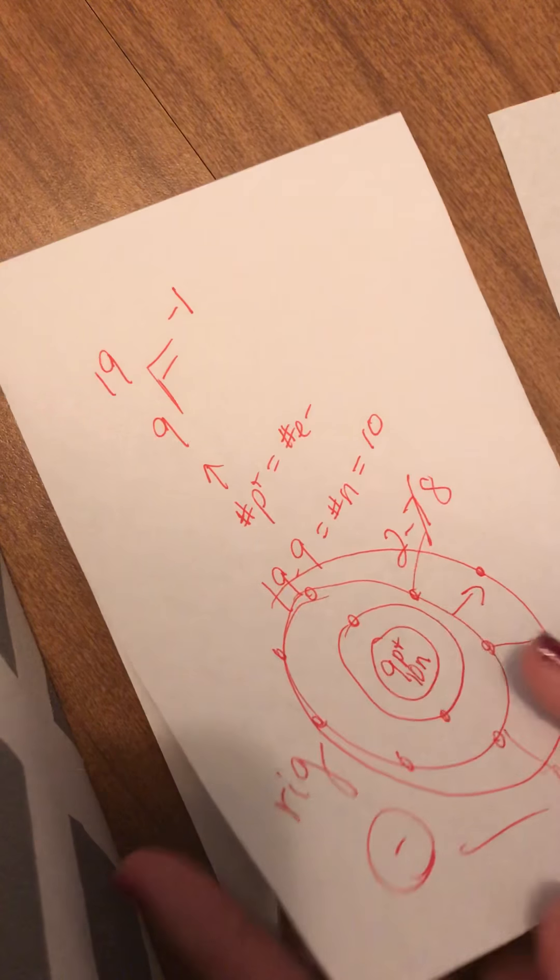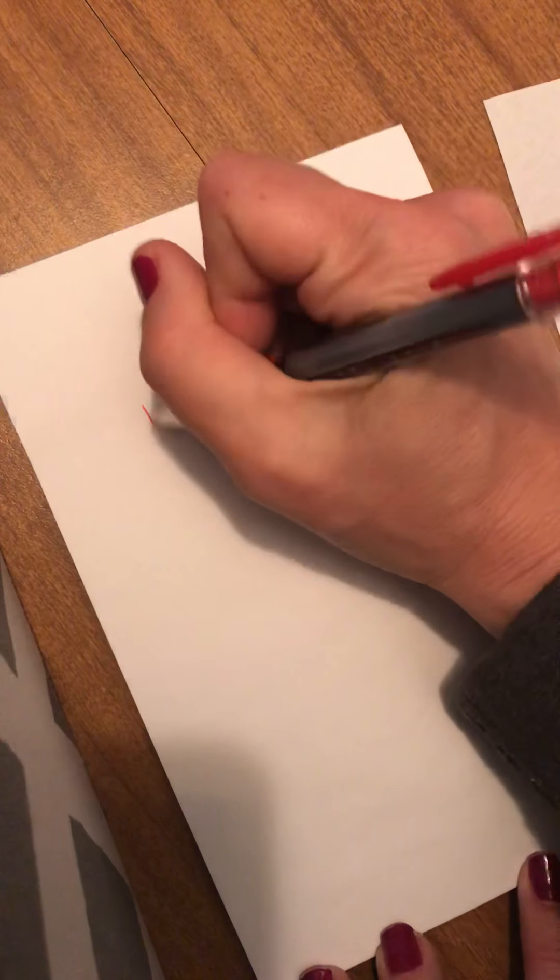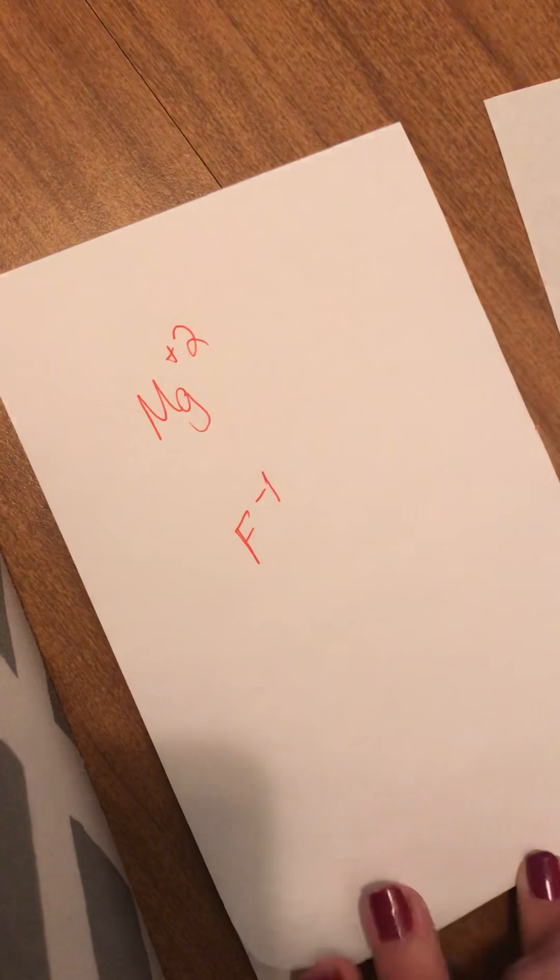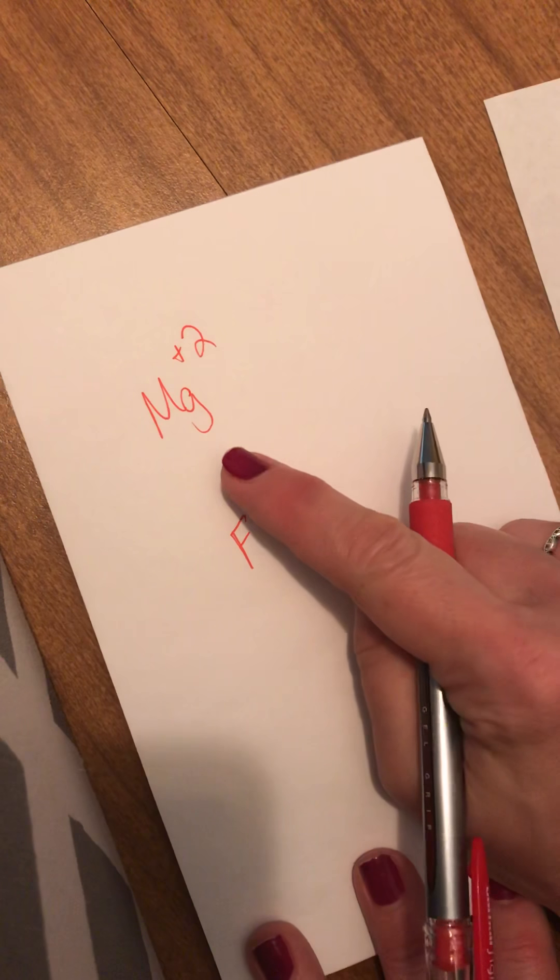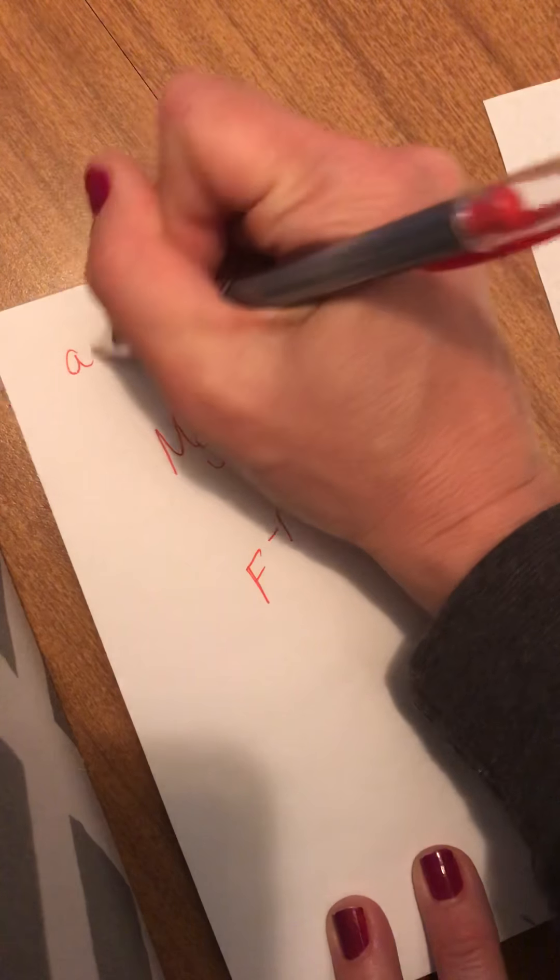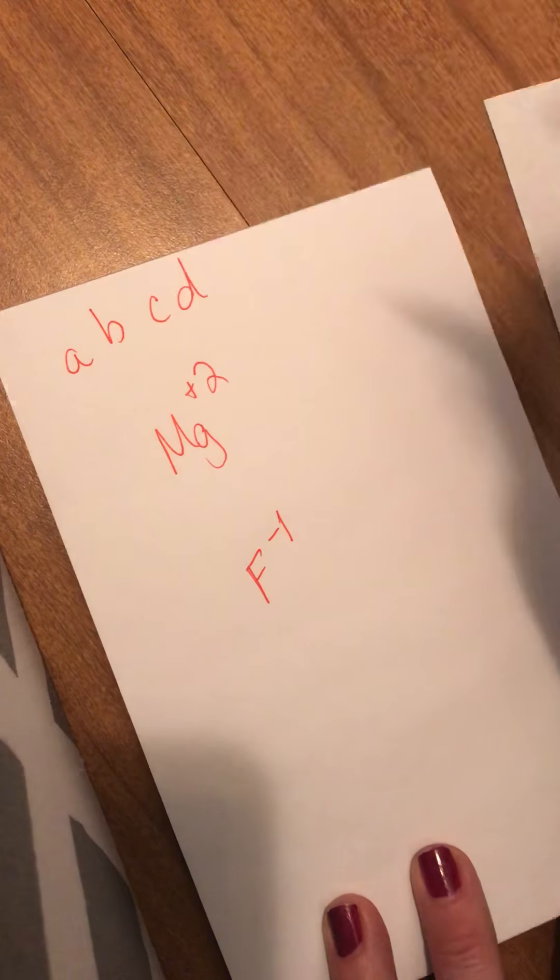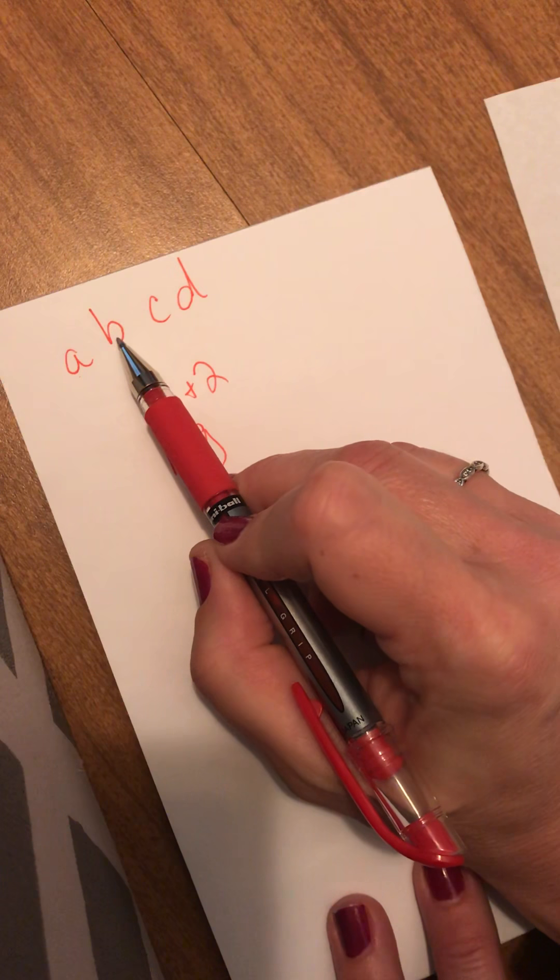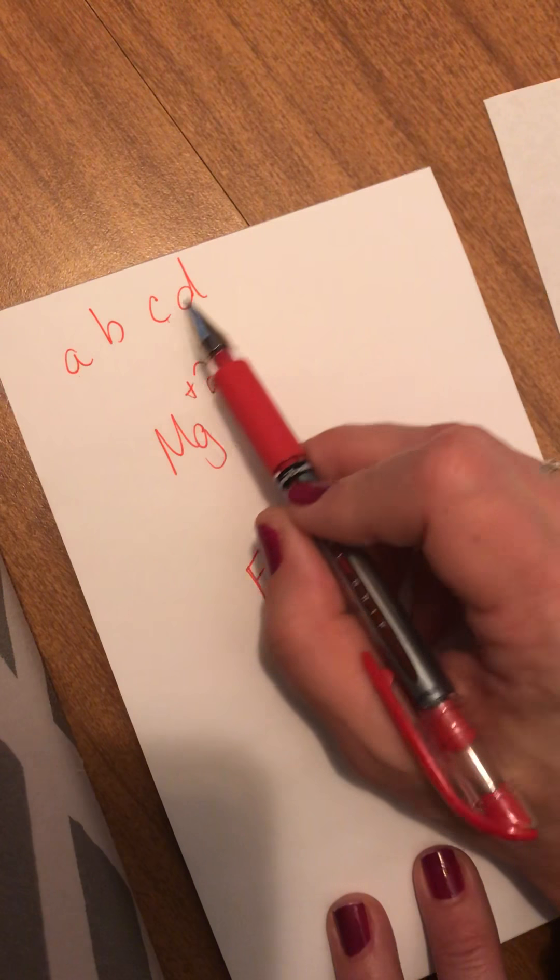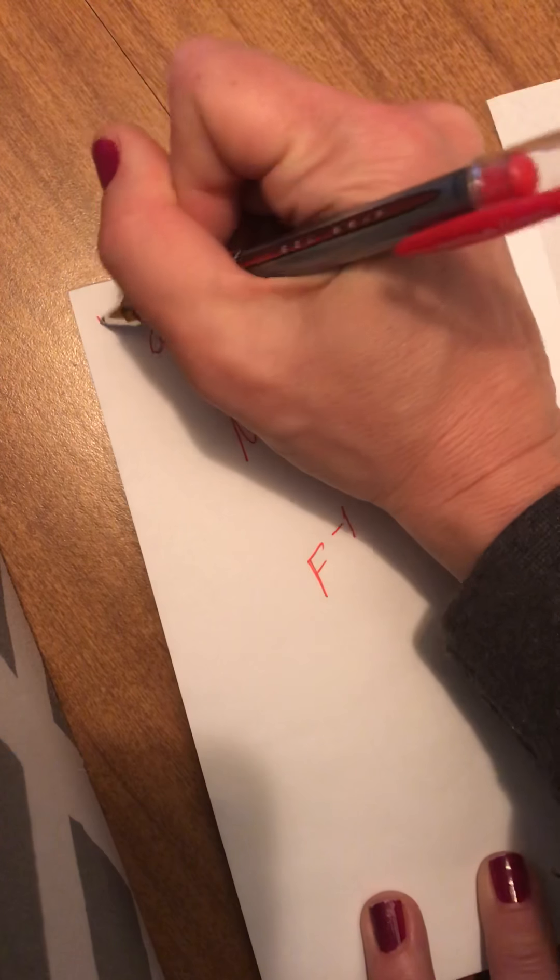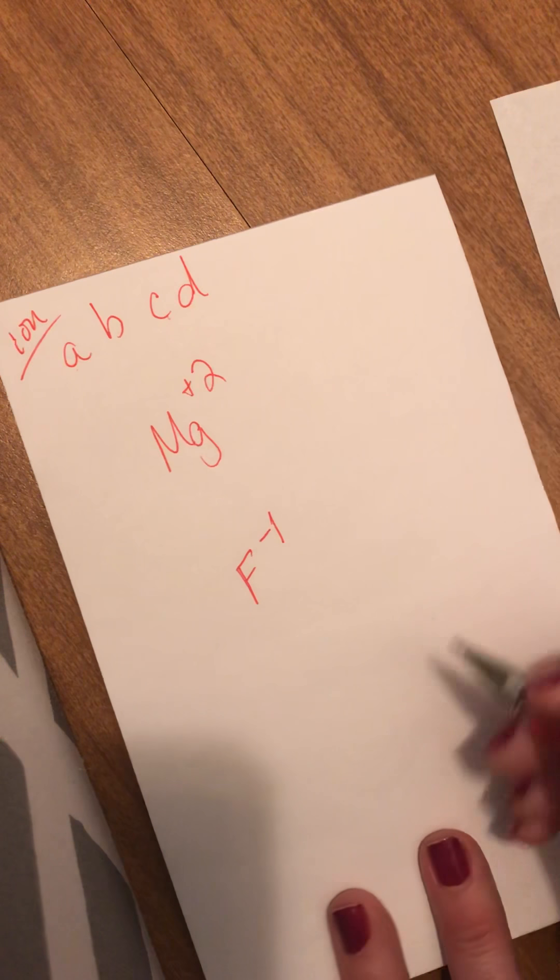When you do a Lewis-Dot diagram for either Mg plus 2 or F minus 1, this is an ion. And I like to say doing Lewis-Dot diagrams of an ion is as easy as ABCD. A stands for atoms. B stands for brackets. C stands for charges. And D stands for dots. I need to include all of these when I am doing an ionic compound or an ion.